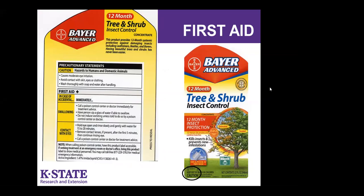If you inadvertently get exposed to these products, all labels have a first aid section — it's critical that you read these statements if exposed. For the Bayer tree and shrub insect control product, it causes moderate eye irritation, all labels say to avoid contact with skin, eyes, or clothing, and to wash thoroughly with soap and water after handling. If this product is swallowed, it says to immediately call the poison control center or your doctor and give the person a sip of water if able to swallow. The next example will have a very different response — so remember that.